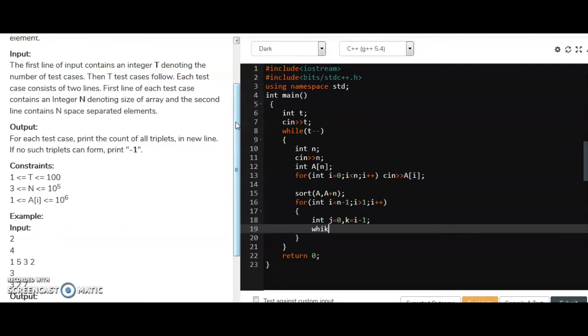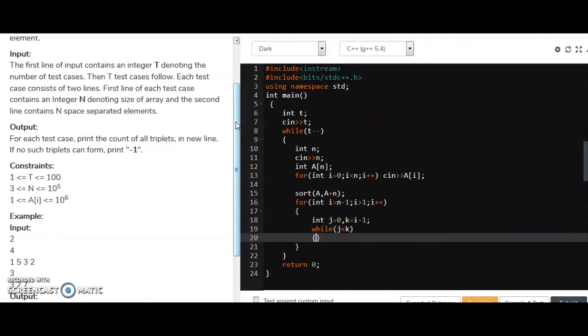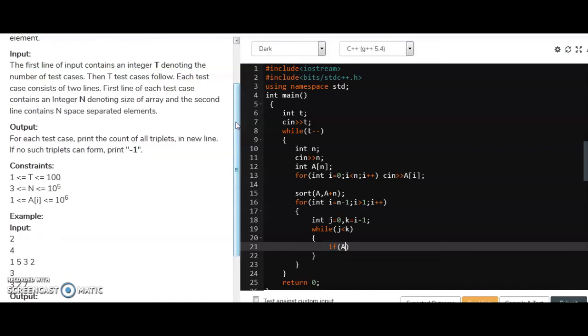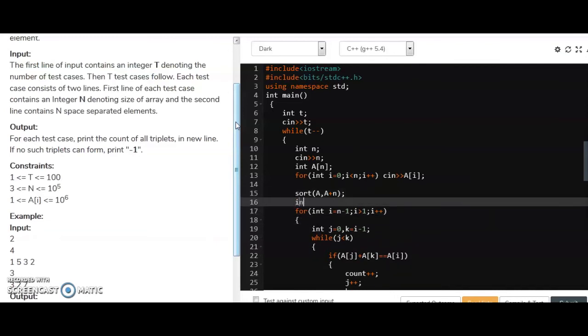And now, while j is less than k, until that, I will do if A of j plus A of k is equals to A of i. Now I will simply do count plus plus and j plus plus and k minus minus. So let's define the count also. Here, int count is equals to 0.